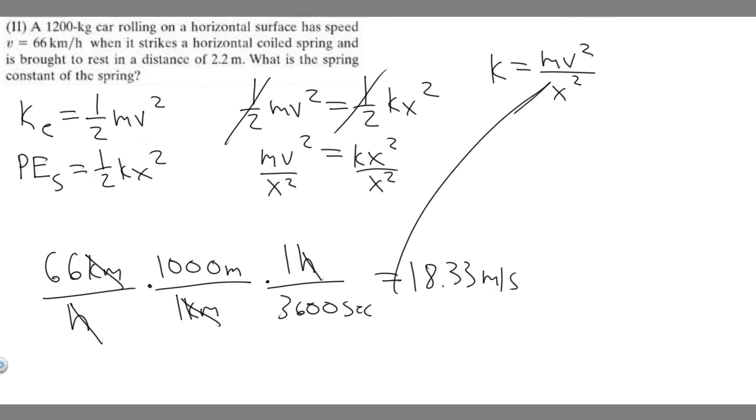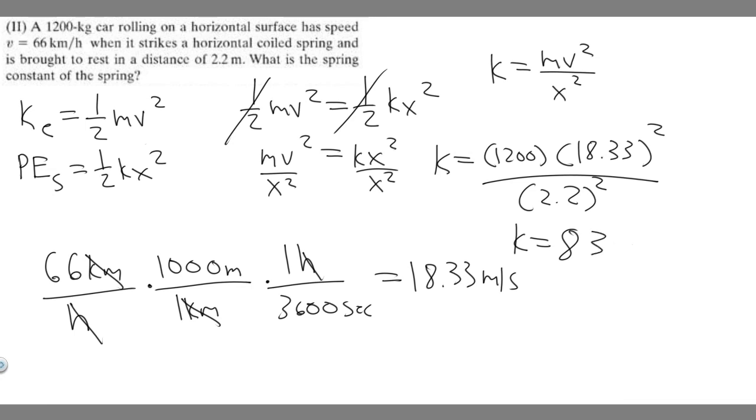We have all the numbers. The constant of our spring is going to equal the mass, which is 1,200, multiplied by the velocity, which is 18.33 squared, over the distance it travels, 2.2 squared. If you do this, 1,200 times 18.33 squared divided by 2.22, you get 83,318.18.